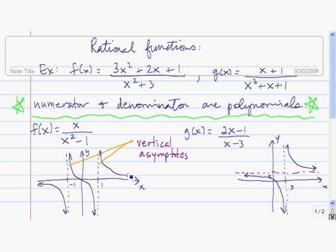This arrow here indicates that the function is getting closer and closer to the x-axis in this direction, and this is indicating that the function is getting closer and closer to the x-axis in this direction. When you have a horizontal line where that happens — namely the graph is getting closer and closer to it — those are called horizontal asymptotes. So in this case, the x-axis is a horizontal asymptote.